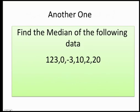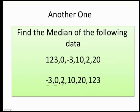Let's do one a little bit more complicated. Find the median of the following data. Here, I have negative 0, 123. Well, remember, step 1. Go from least to greatest. So, I have negative 3, 0, 2, 10, 20, 123, and so on.